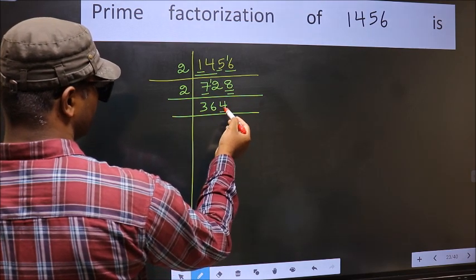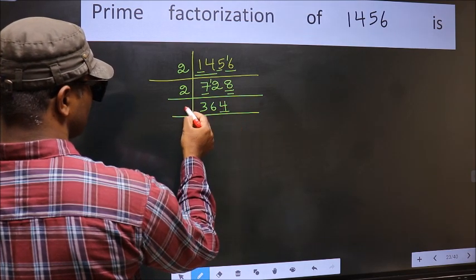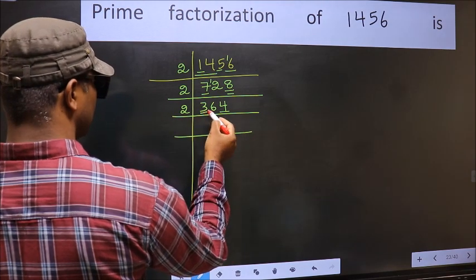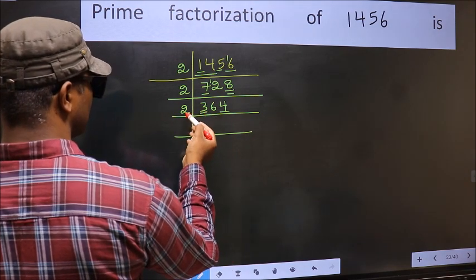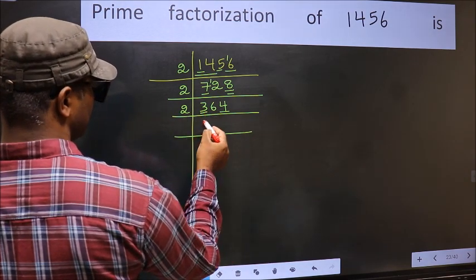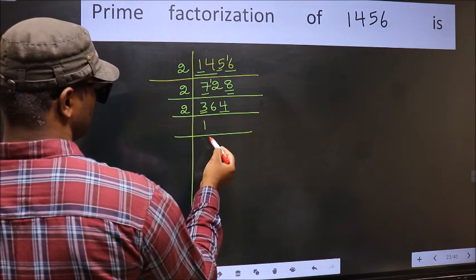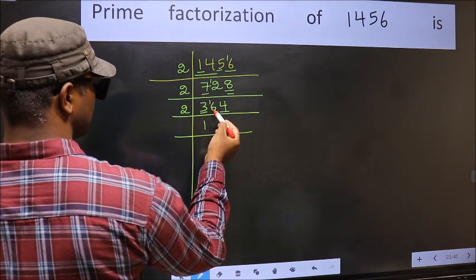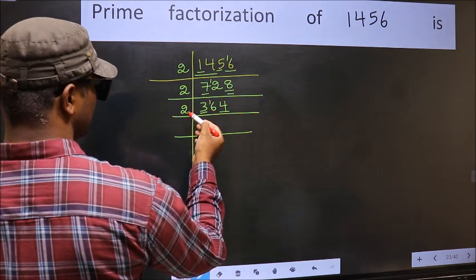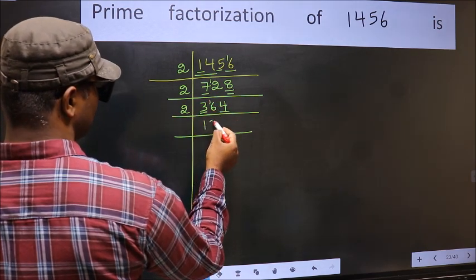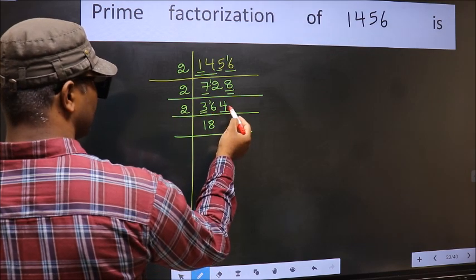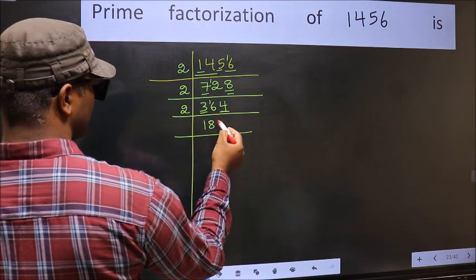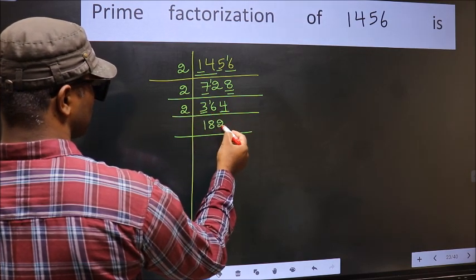Now last digit is 4. So take 2. First number is 8. A number close to it in the 2 table is 2 ones are 2. 3 minus 2 is 1, carried forward: 16. When do we get 16 in the 2 table? 2 eights are 16. The other number is 4. When do we get 4 in the 2 table? 2 twos are 4.